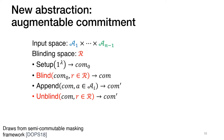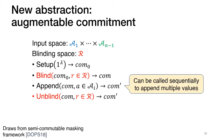Let me begin by presenting a new abstraction called augmentable commitments. This abstraction serves to separate the high-level from the low-level details in our protocol. An augmentable commitment has an input space which is a product space of n-1 separate input spaces and an extra blinding space R. It consists of four algorithms: a setup algorithm that outputs an initial commitment; a blind algorithm that blinds the commitment using a value R from the blinding space; an append algorithm that takes a commitment and a value A from one of the input spaces and outputs a new commitment; and finally an unblind algorithm that takes a commitment and a blind value R and outputs an unblinded commitment.